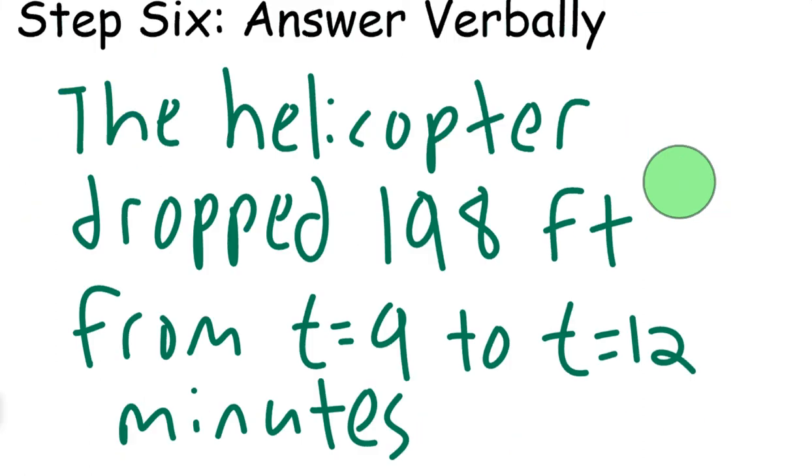My final answer for Step 6—you always want to write a sentence—is: the helicopter dropped 198 feet from t = 9 to t = 12 minutes. Doesn't mean that at some point it didn't rise. It might have risen and then dropped again. We're just saying that its change in position or displacement is 198 feet comparing t = 9 to t = 12. That's it for this displacement question. If you have any other questions, let me know.